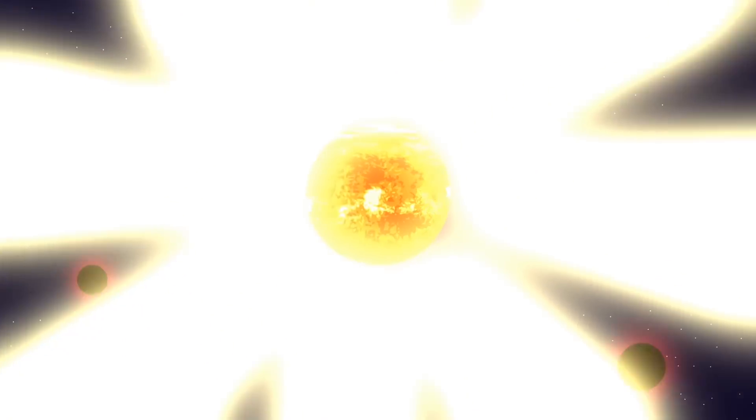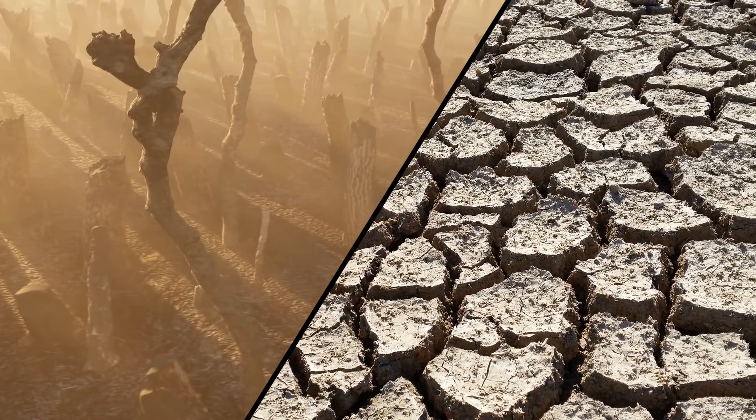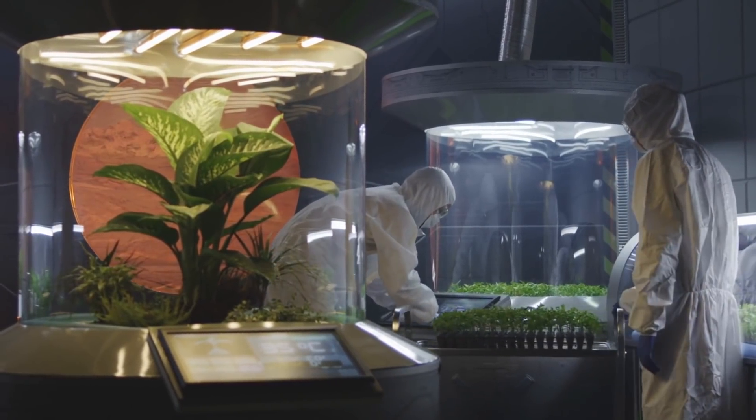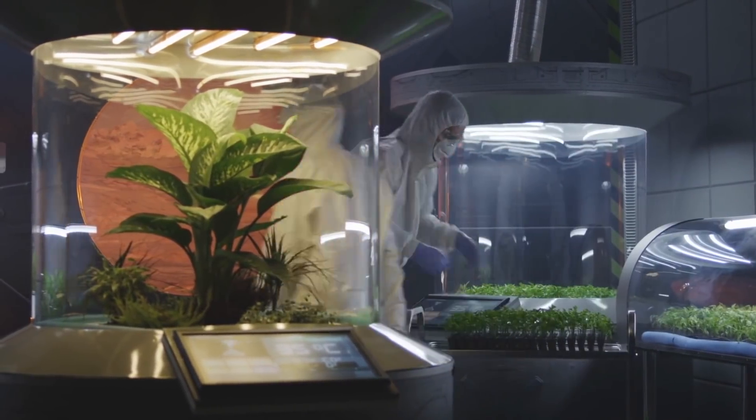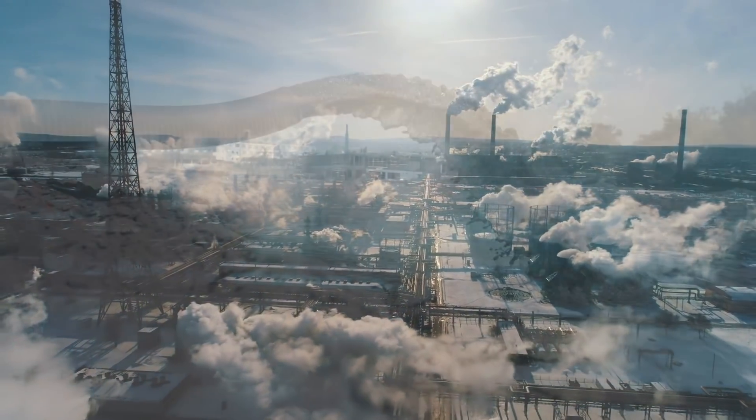When the Sun becomes a red giant in about 5 billion years, the planet will be completely scorched. It's hard to say for sure when the Earth will become uninhabitable for humans, but it's something experts are already trying to plan for.